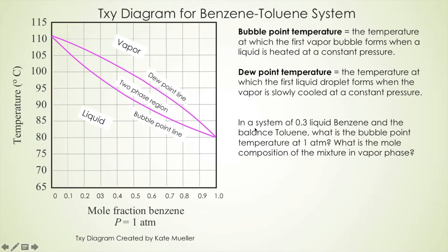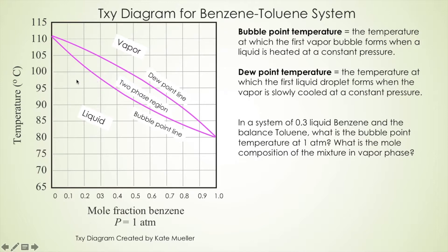Let's try an example. Suppose a system with 0.3 liquid benzene mole fraction, with the balance being toluene. What is the bubble point temperature? We said the bubble point can be read from the bubble point line. Starting from 0.3 on the x-axis, go straight up, and when you touch the bubble point line, that's where you read the bubble point temperature. Reading the temperature, it's about 97.5 degrees Celsius.